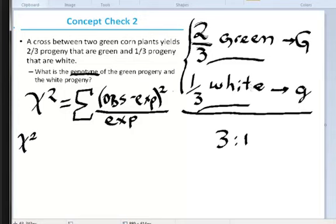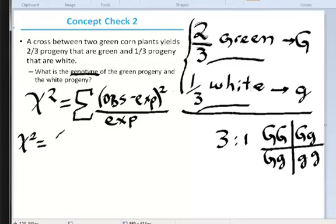So chi-square is equal to, let's see, first for the green. If you observe for the green phenotype two out of three there are green, and you subtract the expected phenotype which is 3, square that, and you divide by your expected phenotype which is 3, so this is for the green.